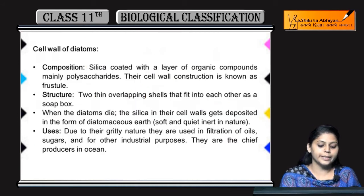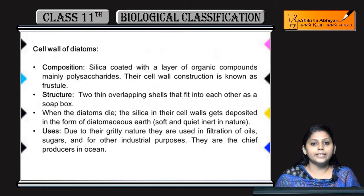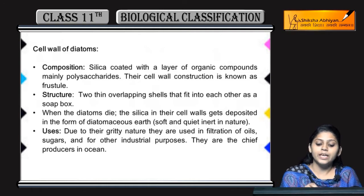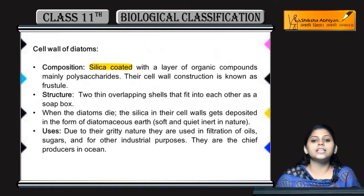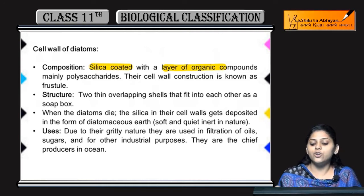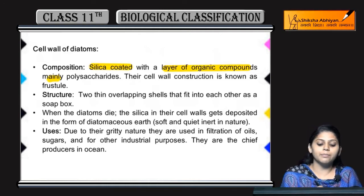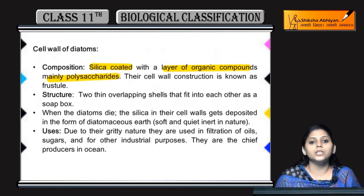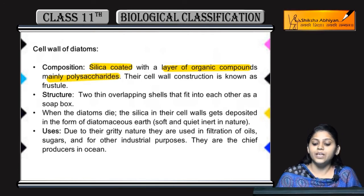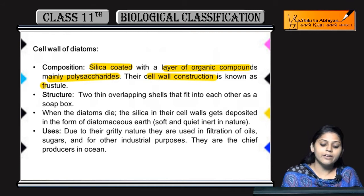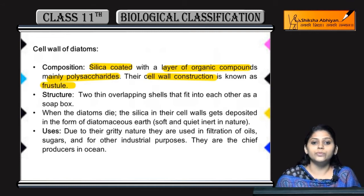Diatoms ki baat karte hai — uska cell wall composition kaisa hota hai? They are silica coated with a layer of organic compounds. Woh organic compound mean bhi hota hai — polysaccharide. Iske cell wall ki construction ko bolte hai frustule.